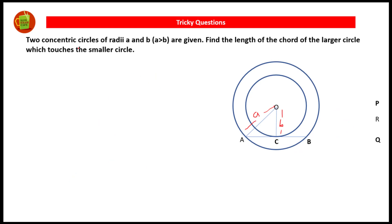The next question: two concentric circles of radii a and b, where a is greater than b, are given. Find the length of the chord of the larger circle which touches the smaller circle. Here are the two concentric circles with center O; radius a is for the larger circle and radius b is for the smaller circle, and AB is tangent to the smaller circle with point of contact C.